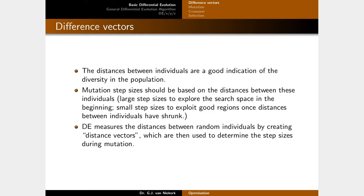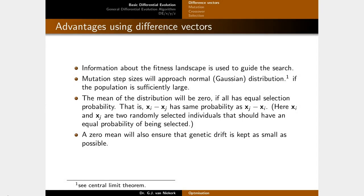Differential evolution measures distances between random individuals by creating difference vectors, which are then used to determine step sizes during mutation. An advantage of using difference vectors is that fitness landscape information guides the search without guessing values. Mutation step sizes will naturally approach a Gaussian distribution given a sufficiently large population, with a mean of zero if every individual has equal selection probability — meaning X_i minus X_j is equally likely as X_j minus X_i.